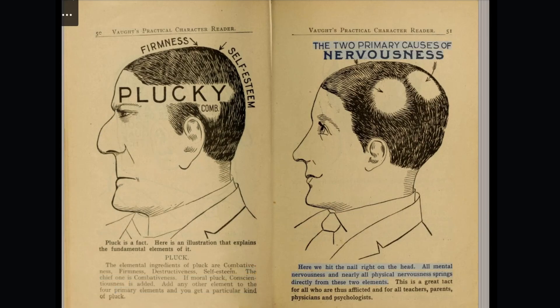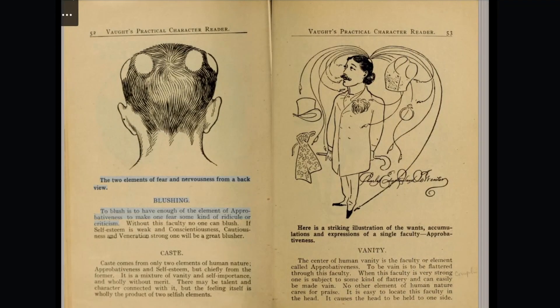The two primary causes of nervousness — here we hit the nail right on the head. All mental nervousness and nearly all physical nervousness springs directly from these two elements. This is a great fact for all who are thus afflicted and for all teachers, parents, physicians, and psychologists. The two elements of fear and nervousness from a back view. Blushing. To blush is to have enough of the element of approbativeness to make one fear some kind of ridicule or criticism. Without this faculty no one can blush. If self-esteem is weak and conscientiousness, cautiousness, and veneration strong, one will be a great blusher.